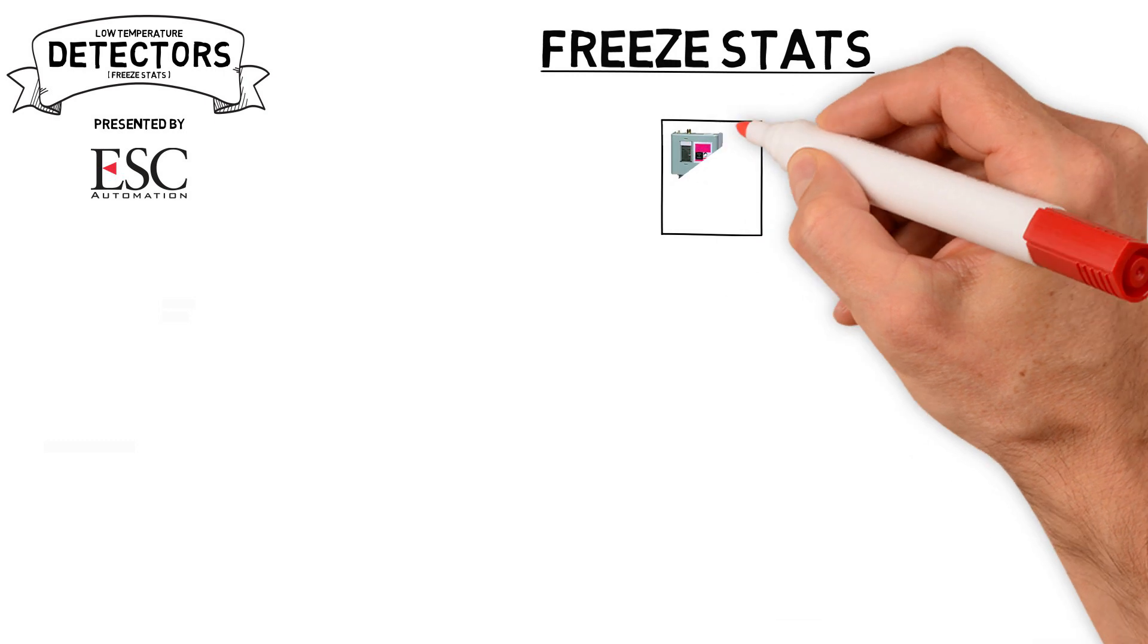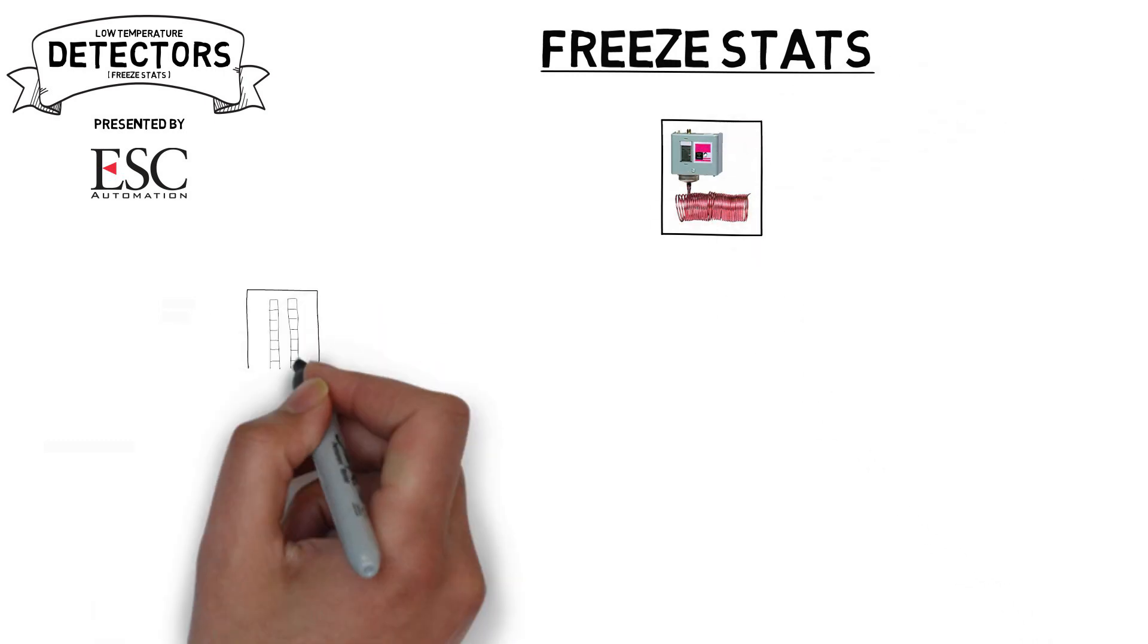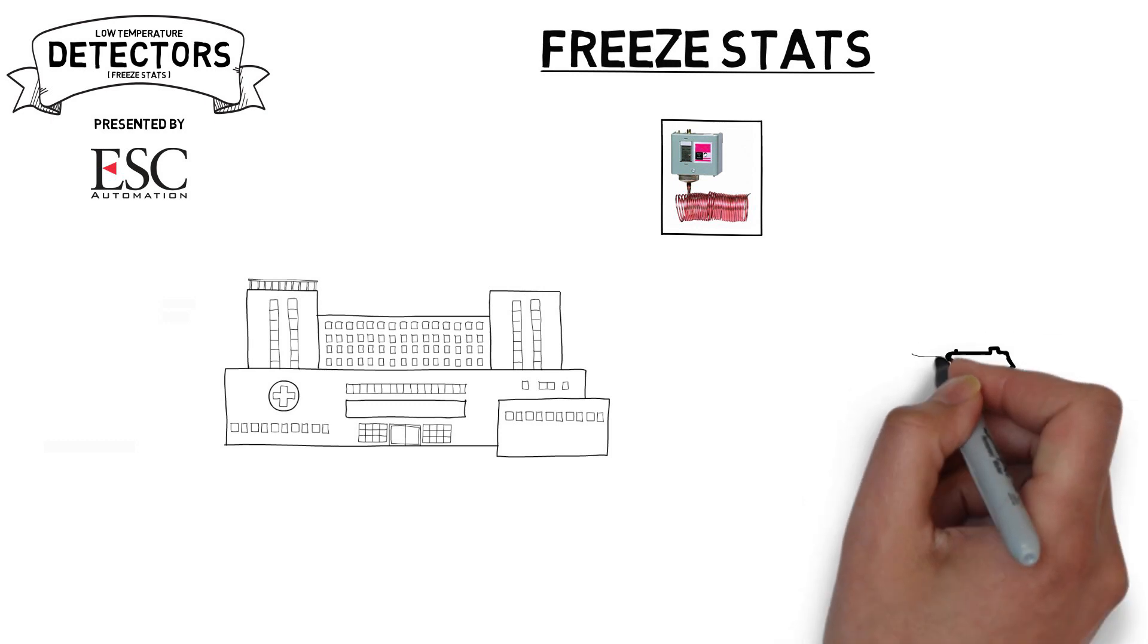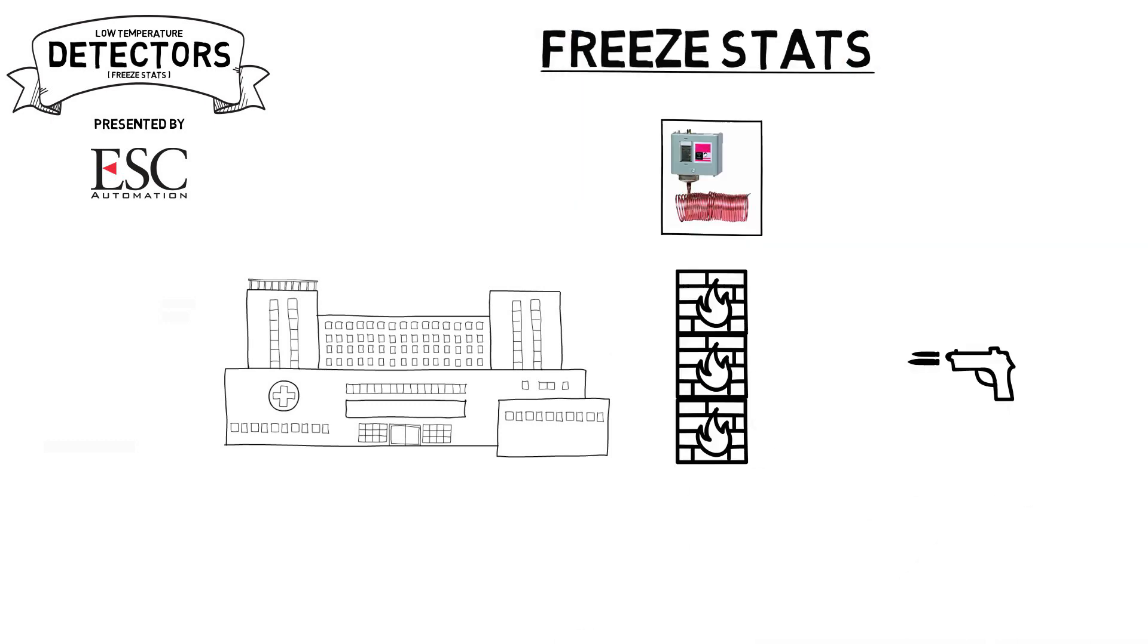The low temperature detector or freeze stat is a safety temperature switch. If installed correctly, it acts as a bulletproof override to all HVAC controls and helps protect the building's hydronic system from freezing. In this video we'll discuss why they're used, where they're installed, how they operate, and go over a few of their basic parts.